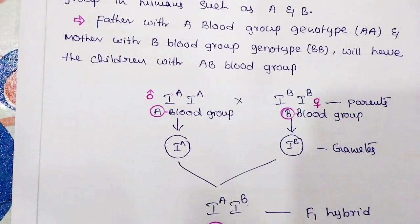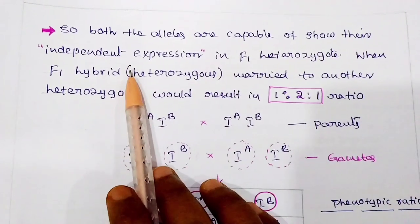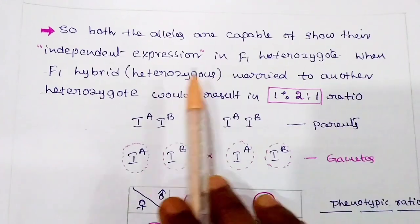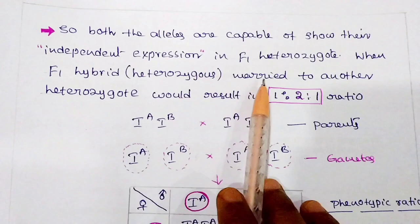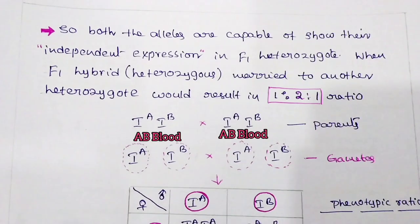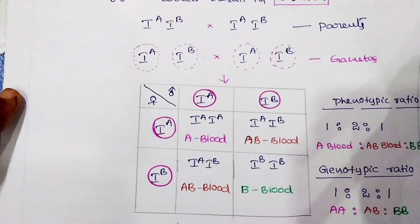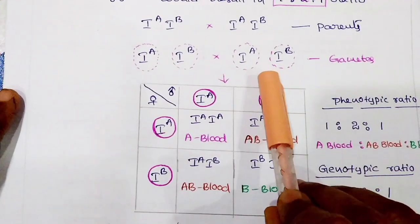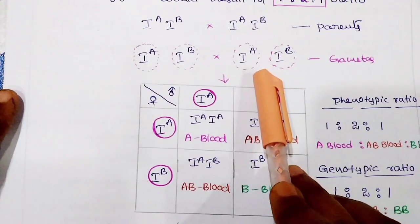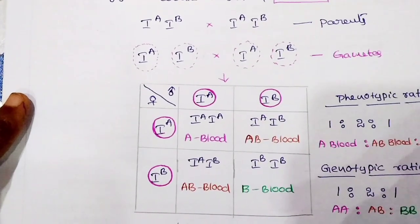Both alleles are capable of showing their independent expression in the F1 heterozygote. When the F1 hybrid (heterozygous) marries another heterozygote, the result is a 1:2:1 ratio. The F1 is heterozygous and hence exhibits codominance, expressing the AB blood group. When this individual marries another heterozygous woman, the F2 ratio results in 1:2:1. Let's see the Punnett board.